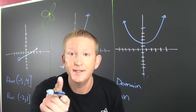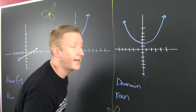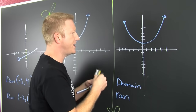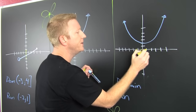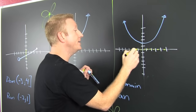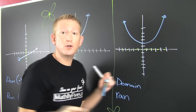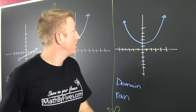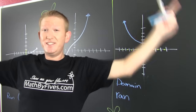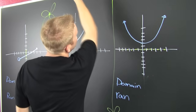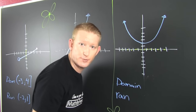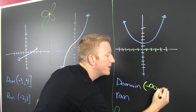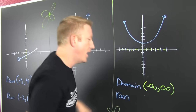Now for this second example, the domain is the set of all x values. Every x value is represented — the graph continues to go in both directions and doesn't stop. So all x values are represented, and the domain goes from minus infinity all the way to positive infinity.